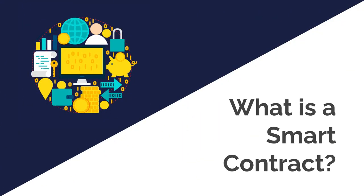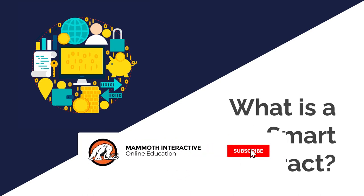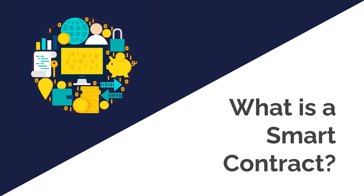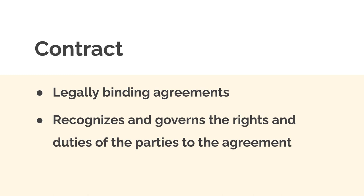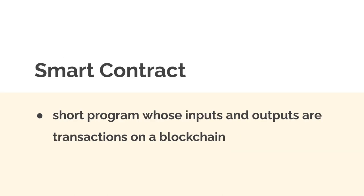Hello everyone and welcome back to our course. In this lecture we are going to discuss what is a smart contract, because in this course we are going to be building smart contracts for the Cardano blockchain using Haskell Marlowe. A contract by definition is a legally binding agreement — it recognizes and governs the rights and duties of the parties. A smart contract is similar in that it creates an agreement between two parties, but specifically a smart contract is a program — typically a short program whose inputs and outputs are transactions on a blockchain.